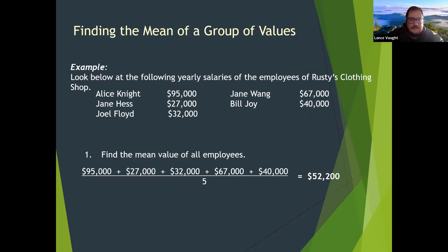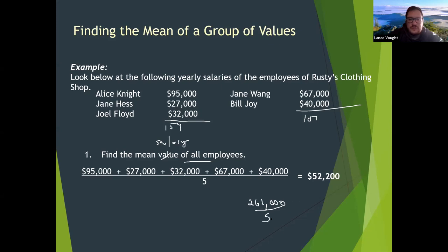Let's find the mean of a group — the average salary of these employees. Alice makes $95,000, Jane makes $27,000, Joel makes $32,000, another Jane makes $67,000, and Bill makes $40,000. If you add all these together you get $261,000 divided by five, which gives you $52,200. Just add up the observations and divide by the number of observations you have.